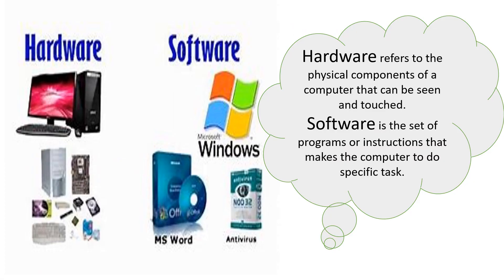Dear children, come to the lesson. Take page number 12, Types of Software. Hardware and software are the two important elements of a computer system. Hardware refers to the physical components of a computer that can be seen and touched. Software is a set of programs or instructions that makes the computer do specific tasks.